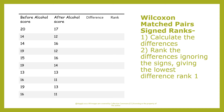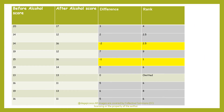The next part of the calculation is to rank the differences. We do this whilst ignoring the signs — so if it's minus 1 or plus 1, it's still ranked the same. Looking at our data, the lowest score was minus 1, so we gave it the rank value of 1, and our highest score of 7 got the rank value of 9.